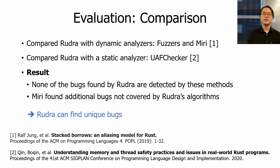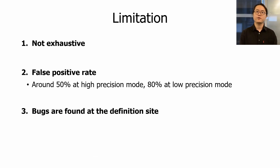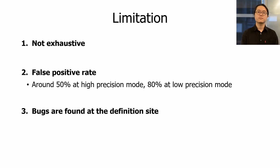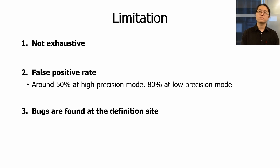Although Rudra can find subtle, non-trivial, and unique bugs, it has three major limitations. First, Rudra is not exhaustive — the heuristics are not complete, and its intra-procedural analysis will miss bugs caused by interaction across multiple APIs, so the absence of a Rudra report does not guarantee soundness. Second, it has a relatively high false positive rate; we intentionally limited algorithmic complexity to achieve scalability, so Rudra provides three precision modes to let users adjust sensitivity. Third, Rudra finds bugs at the definition site — a strength enabling proactive bug prevention, but it does not indicate how many packages are affected or how likely the API is used vulnerably. We believe assessing ecosystem-wide safety impact is an interesting future research direction.